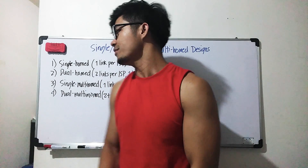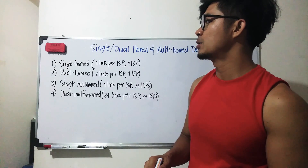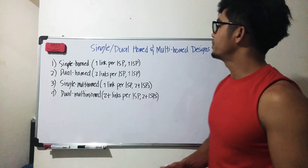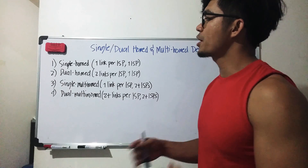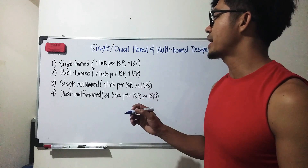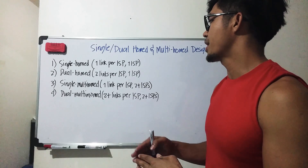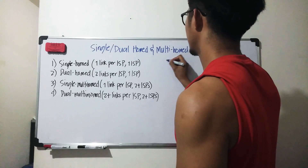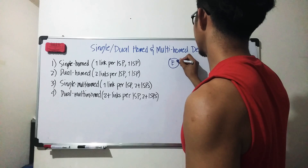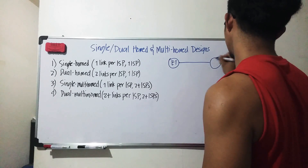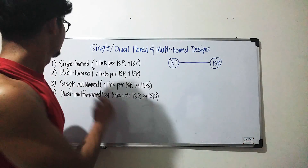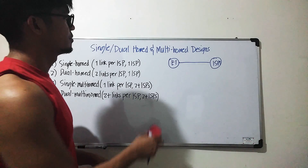In this video I'm going to talk about four ways that we can connect our enterprise to an ISP or ISPs. Number one is single-homed: basically one link — we have a single link connected to a single ISP. Here's an example: we have an enterprise router connected to a single ISP. That is an example of a single-homed design.